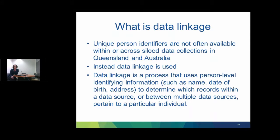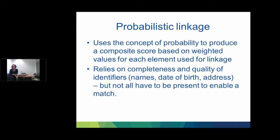The reason we do linkage is that across most of these data collections there is no unique identifier to say that information relates to a single person across collections. So we use data linkage — a process that uses person-level identifying information such as name, date of birth and address to determine which records within or between data sources relate to a particular individual. When we talk about linkage, we're usually referring to probabilistic matching, where not all information needs to be available and quality doesn't need to be perfect to make a match.